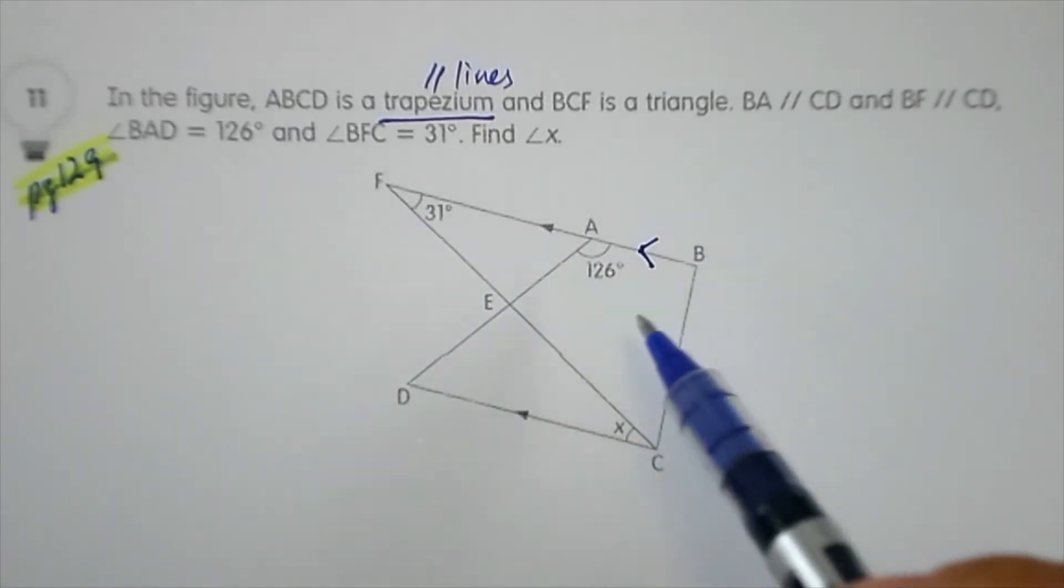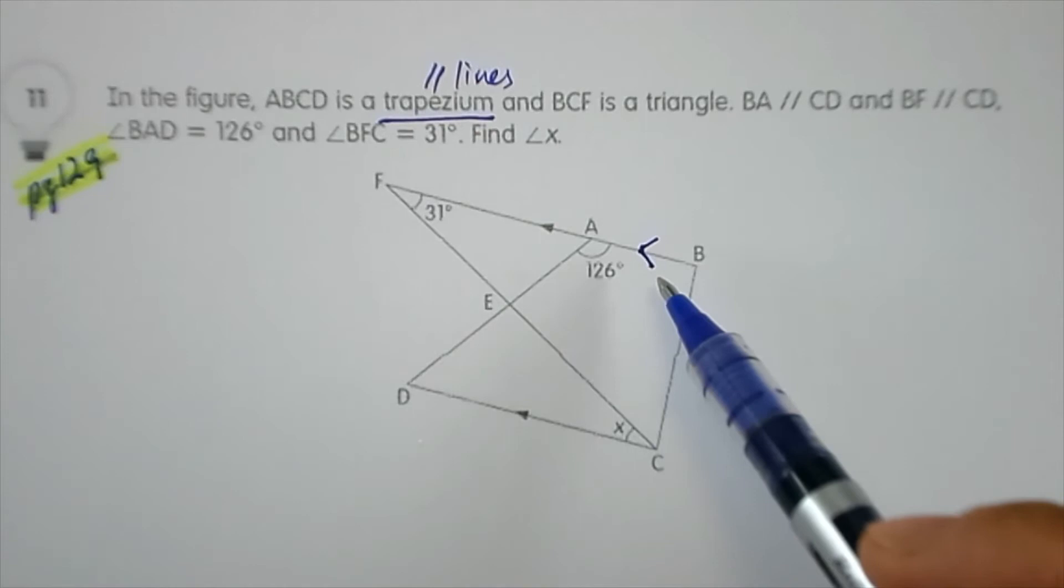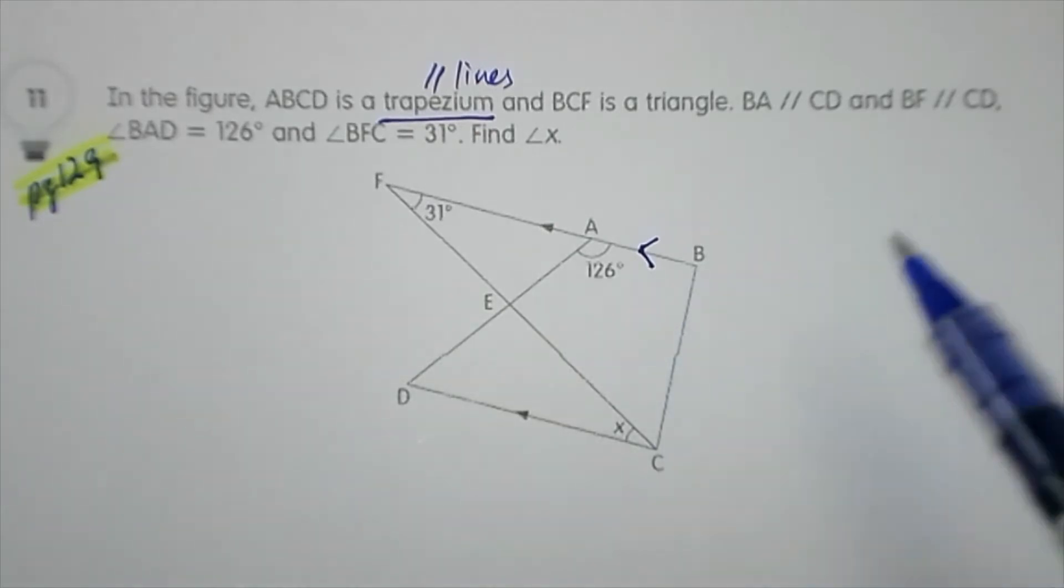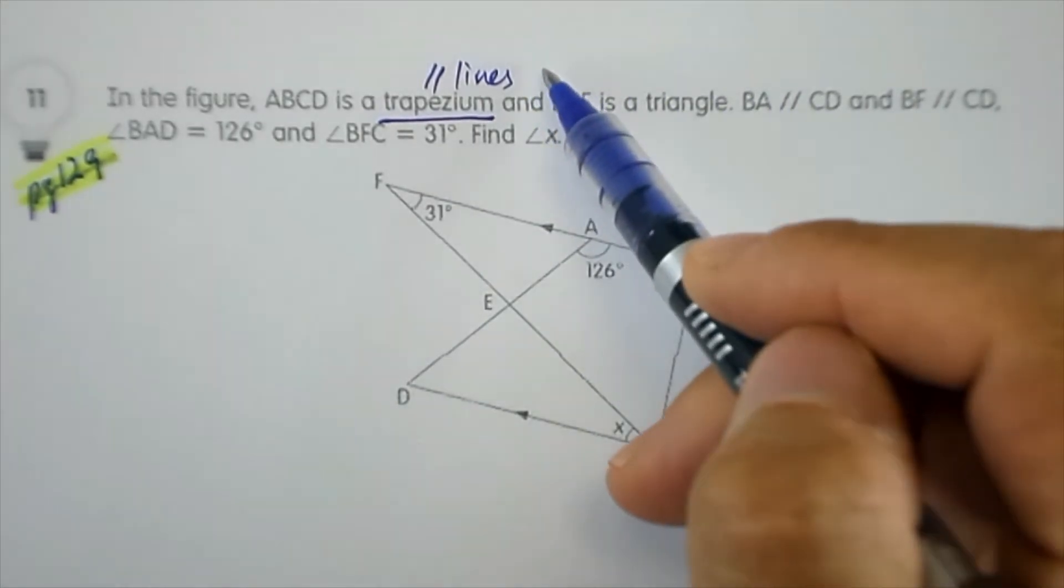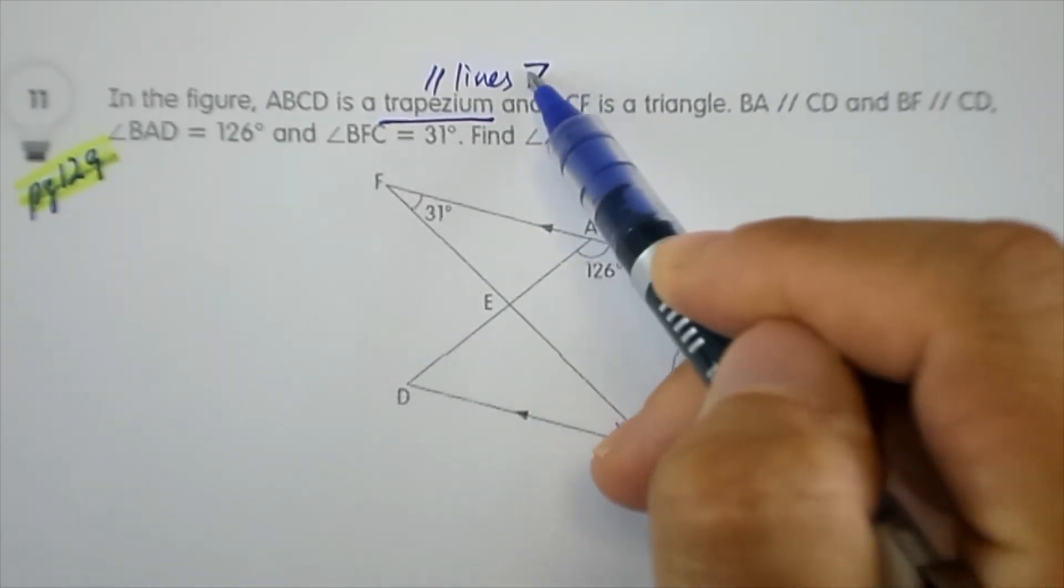Looking at the diagram, for the properties of a trapezium, we will look for not only parallel lines but alternate angles. So you look for the Z pattern.